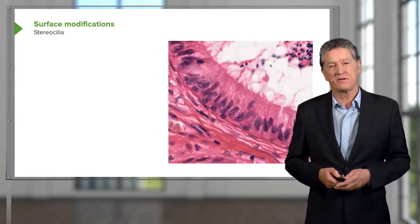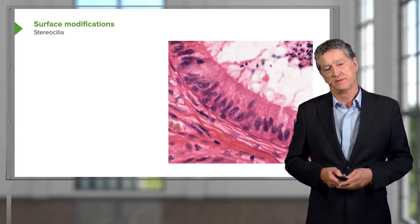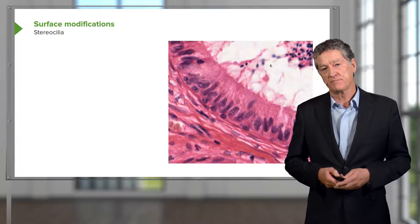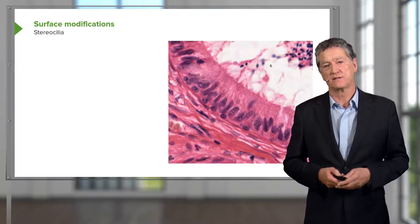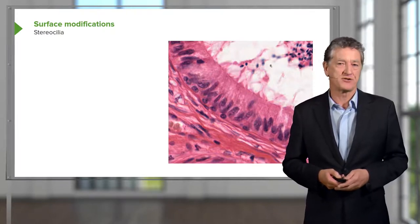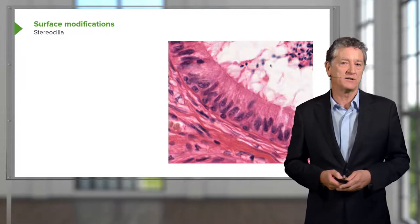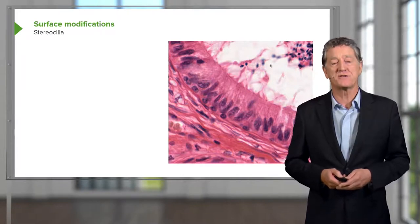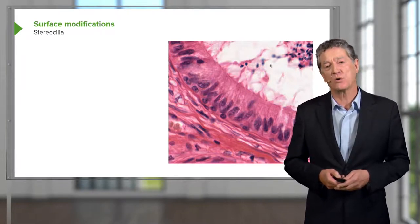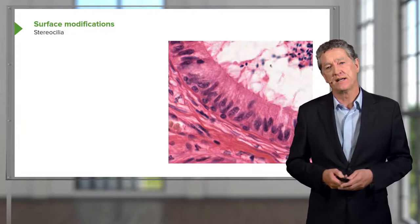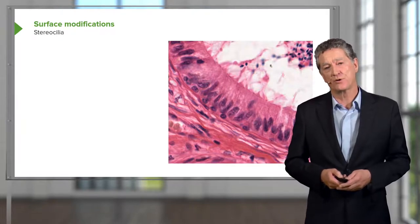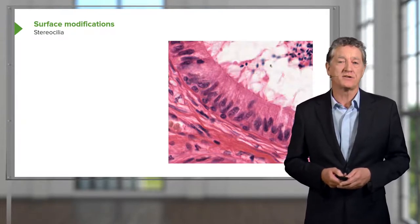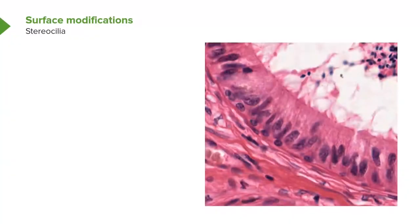Stereocilia are very similar to microvilli but longer because the actin filaments are longer. They also branch and use different anchoring proteins to hold actin filaments to the terminal web and cell membrane. Essentially they are similar structures specialised for absorption of fluid.